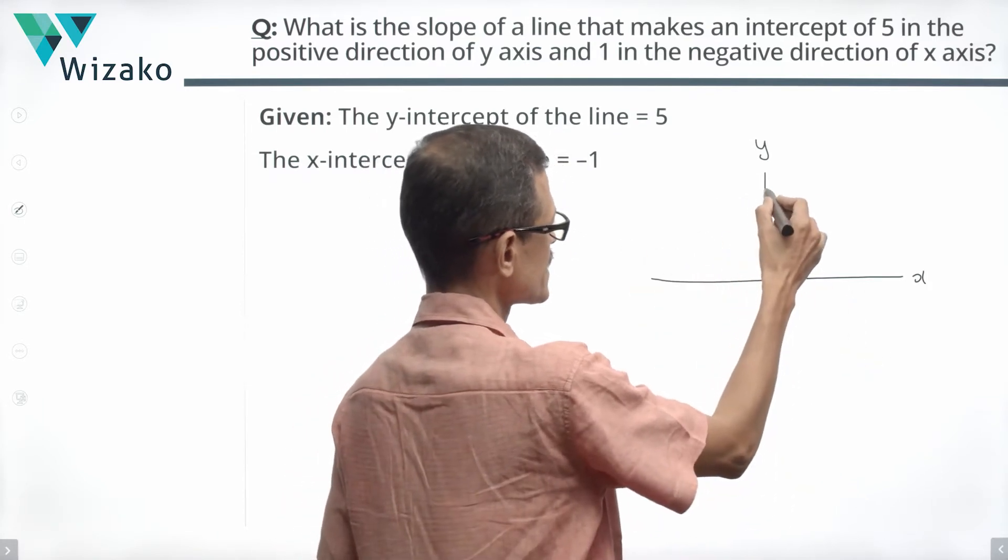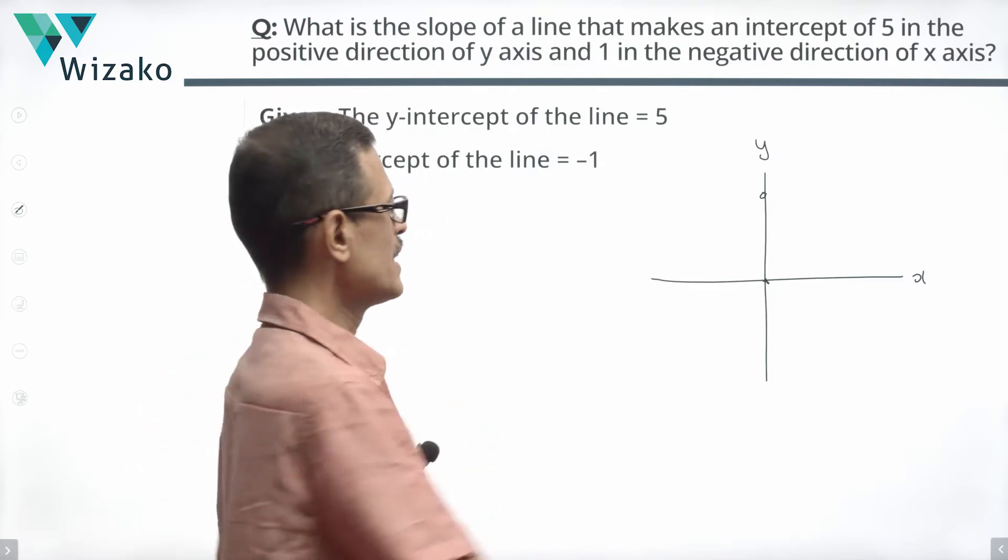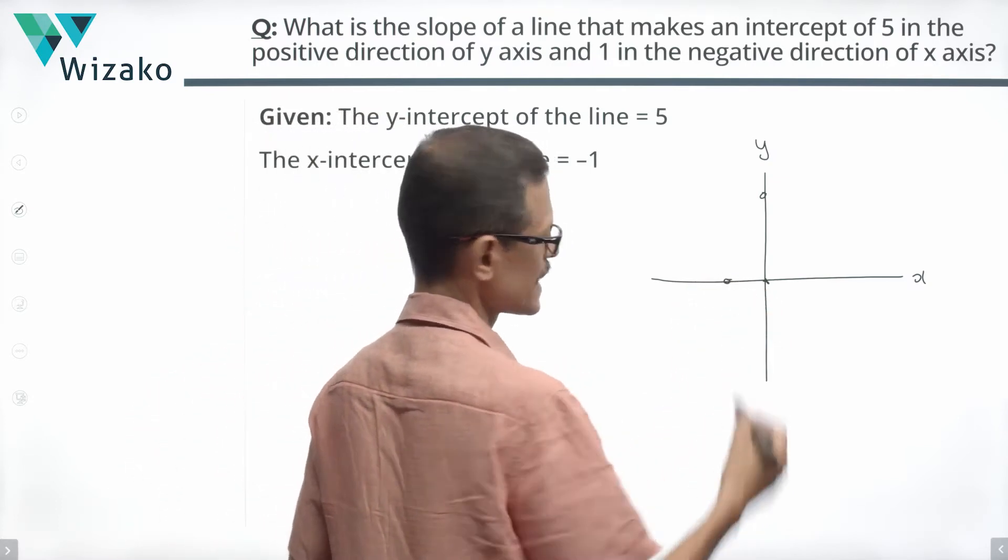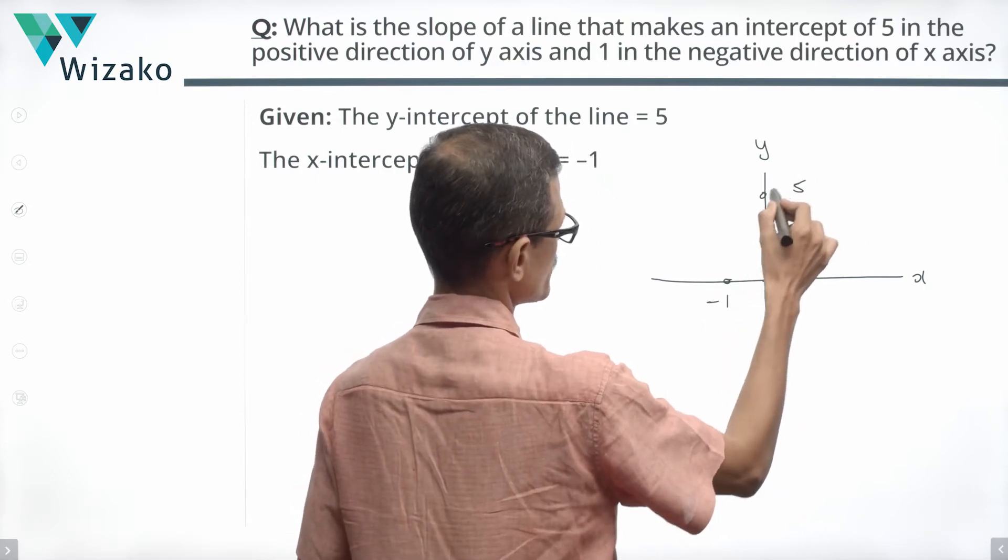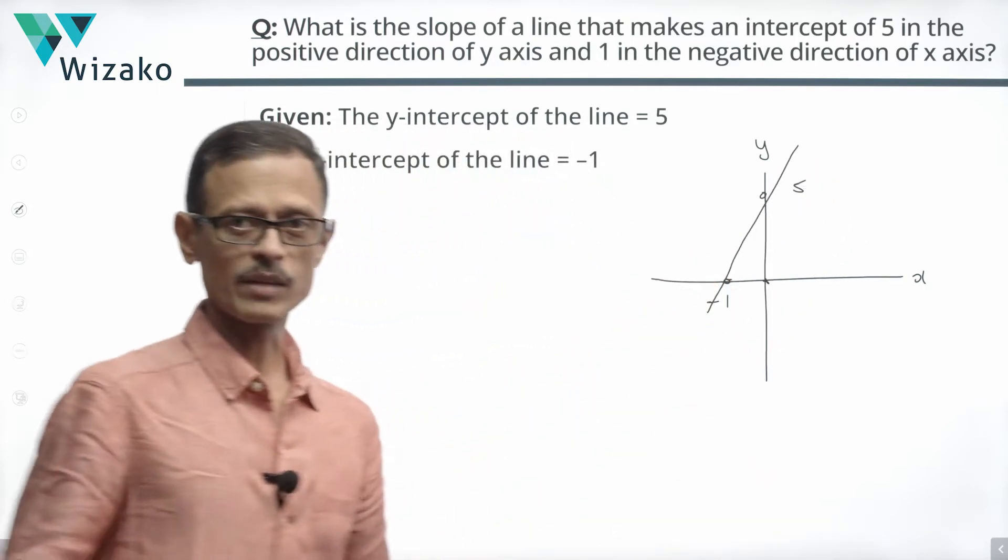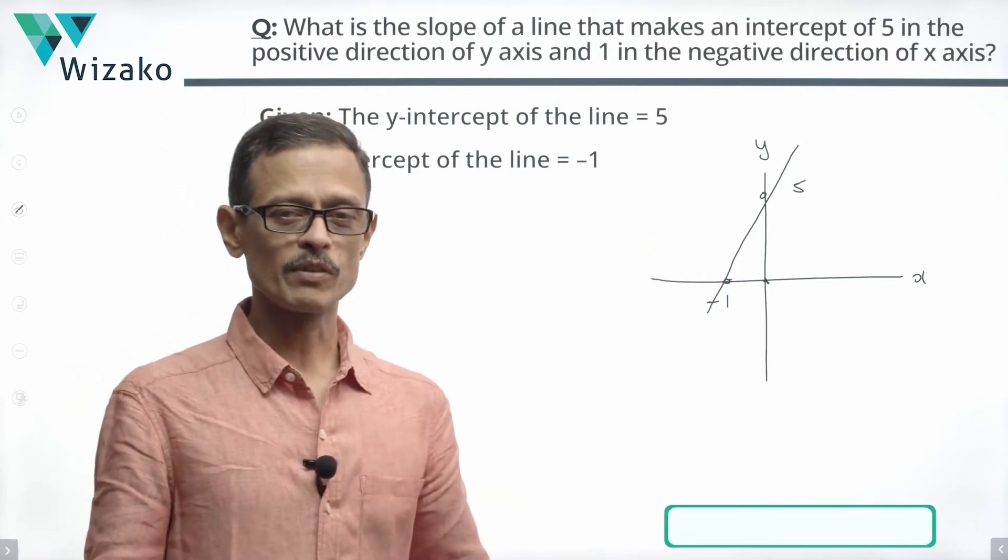It makes an intercept of 5 in the positive direction of y-axis and an intercept of 1 in the negative direction of x-axis. So x-intercept is minus 1, y-intercept is plus 5. This is the line that we are talking about. We need to compute the slope of this line.